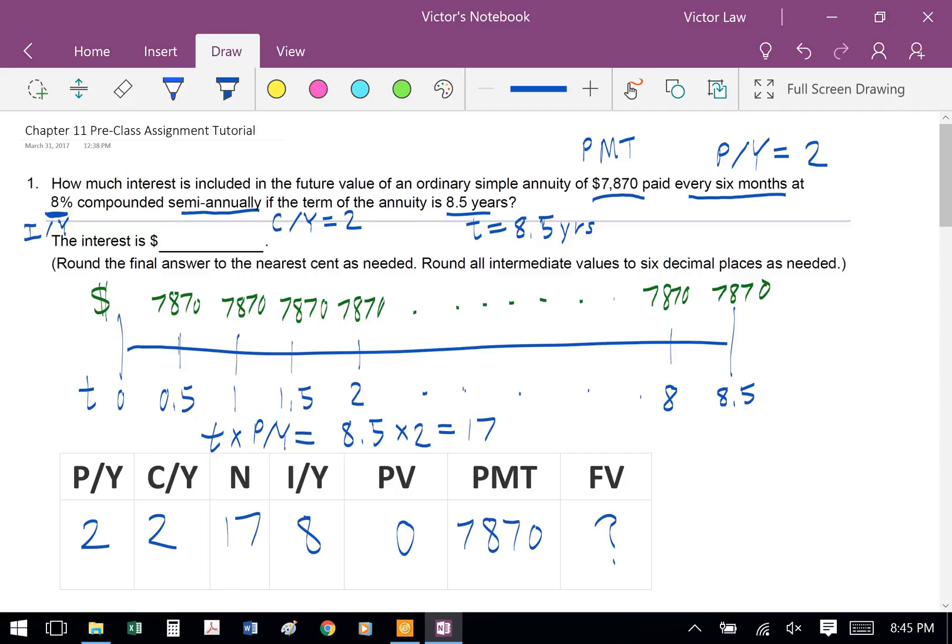Once we understand the timeline, we can start filling in the numbers. P over Y equals 2, C over Y equals 2. To solve for N, N equals T times P over Y, which equals 8.5 times 2, which is 17. Our I over Y is 8%, present value is 0, payment is $7,870, and we're solving for future value.